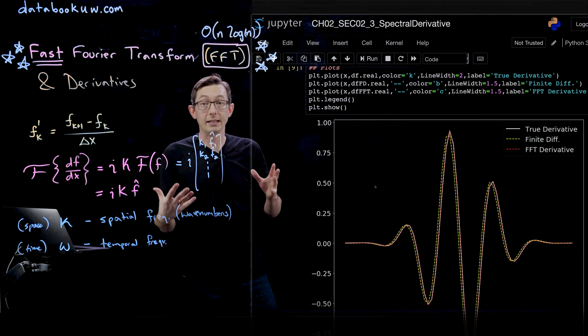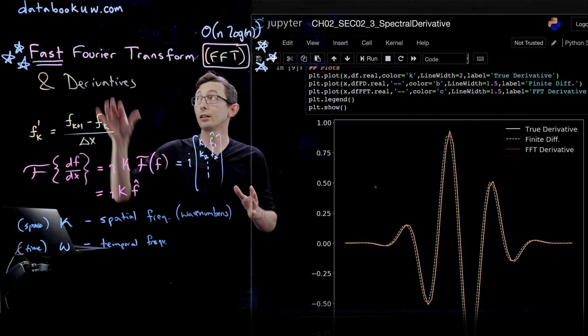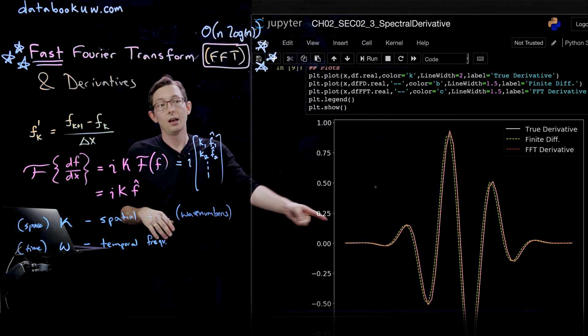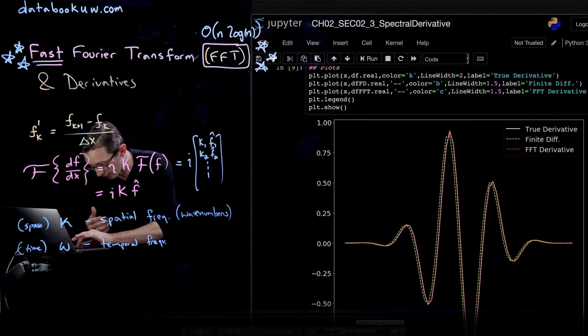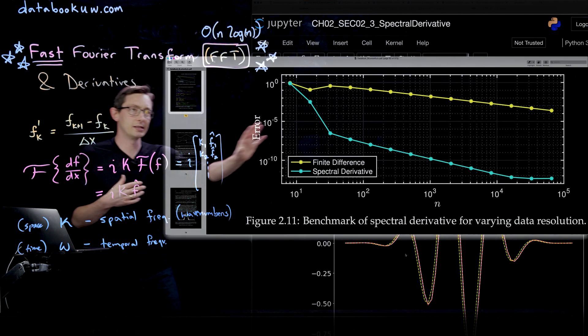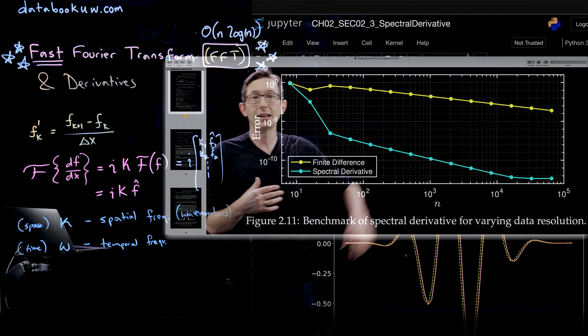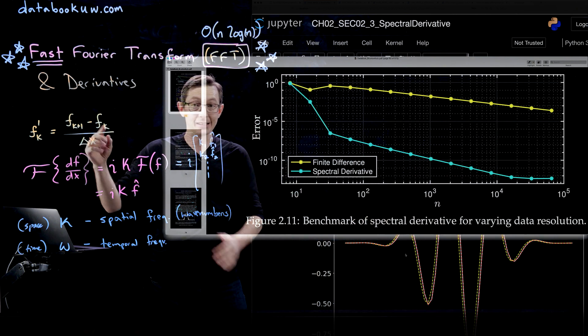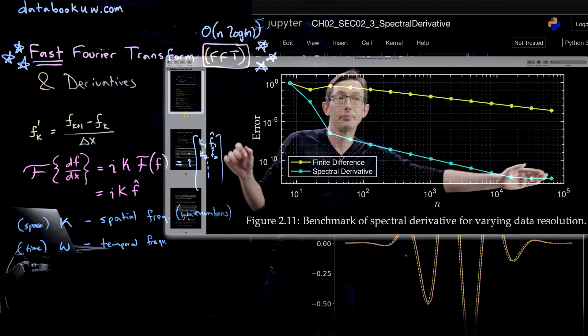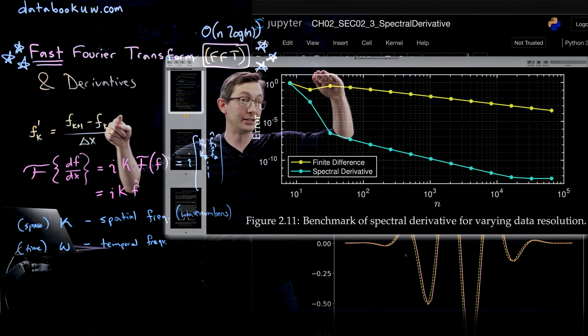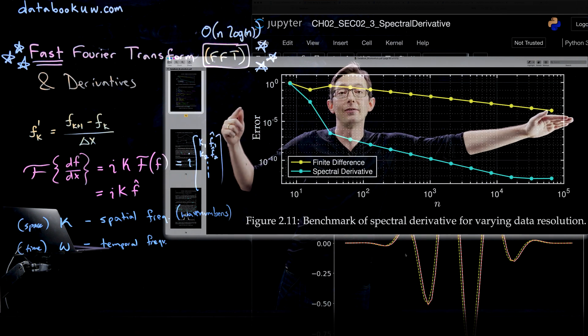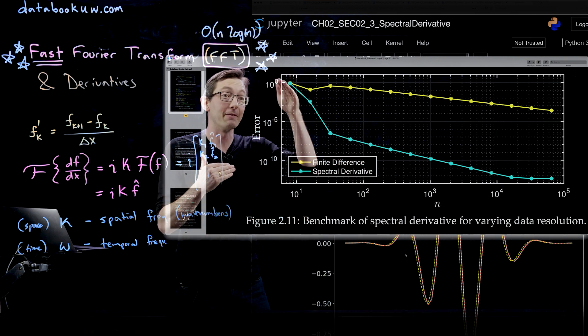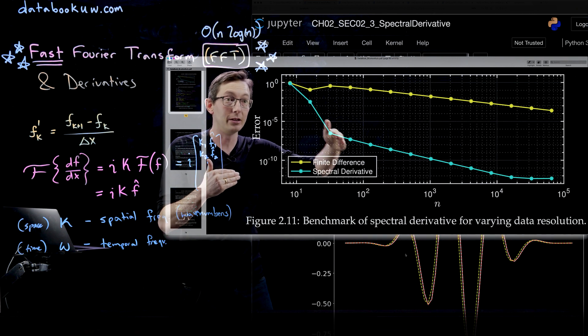This was not meant to be super quantitative or exhaustive. Actually in our book, Data-Driven Science and Engineering, you can find it at databookuw.com and in the links, we go through this example more exhaustively. I'm going to walk you through this here. This is a more careful study. As you increase the number of data points in your signal, which is the same as decreasing delta x, as you make delta x smaller or n bigger, it is true that this finite difference derivative does get more accurate, but it gets more accurate very slowly.